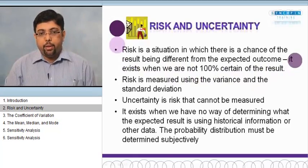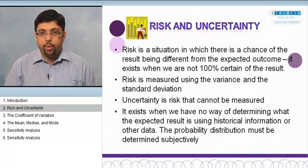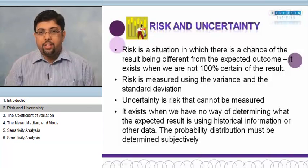Risk, uncertainty, and expected value. There is a fine difference between risk and uncertainty. Risk is a situation in which there is a chance of the result being different from the expected outcome. It means we are expecting a certain thing to happen, and there is a chance or probability that we will not have the same expected value.